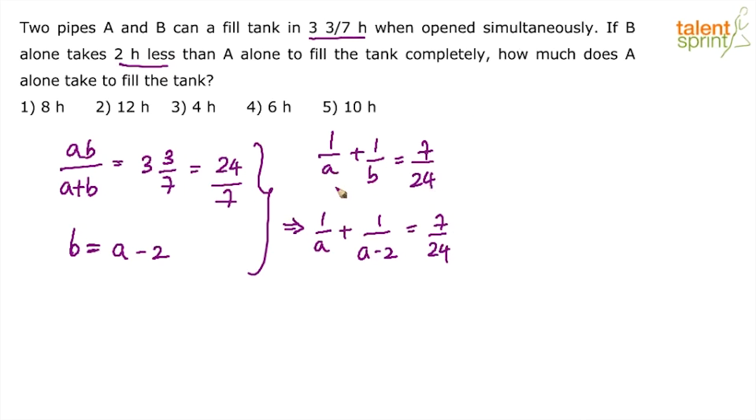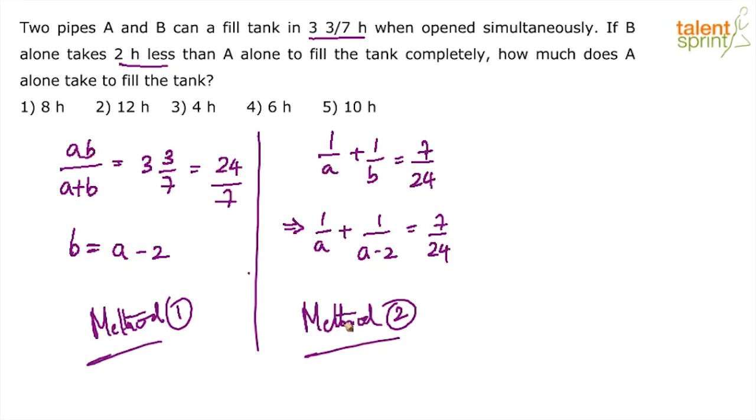Let me clear this up because it looks like the next step, but it is not the next step. It is method number 2. This is method 1. Here is method 2, where we have simplified it to some extent, because we have only one equation in one variable: 1 by A plus 1 by A minus 2 equals 7 by 24. So this one equation can be solved to find out the value of A.